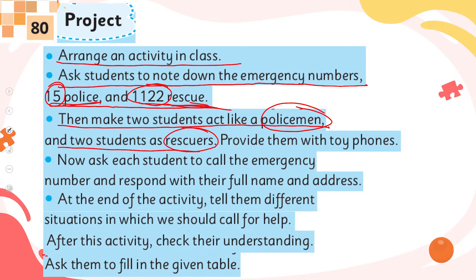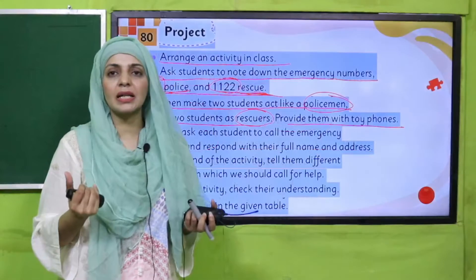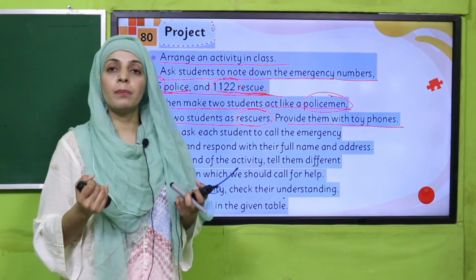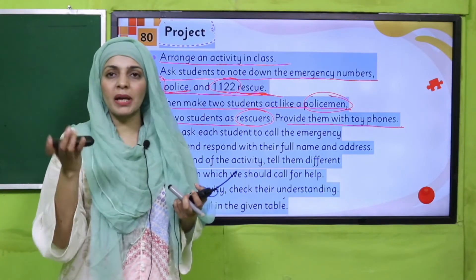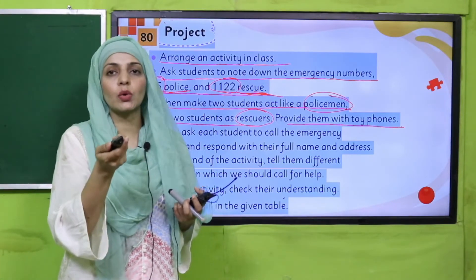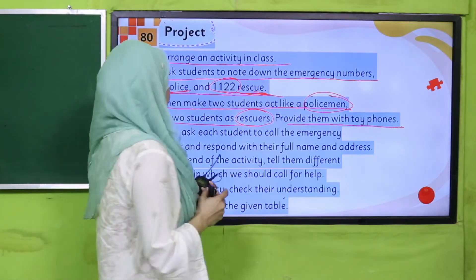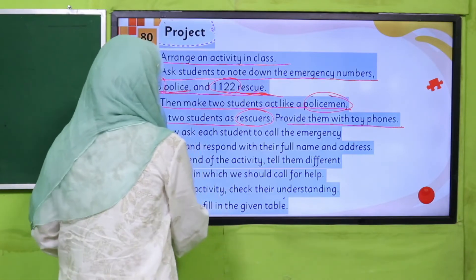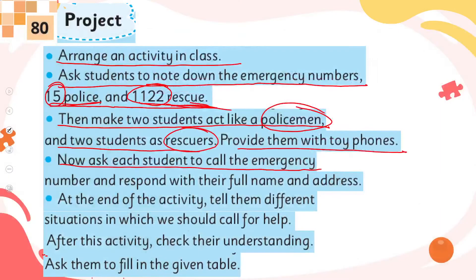The two rescue students will use number 1-1-2. Provide them with toy phones — students can bring phones from home, or a pencil box can be used as a phone. For example, you can also use this as a phone. Now ask students to call the emergency number.